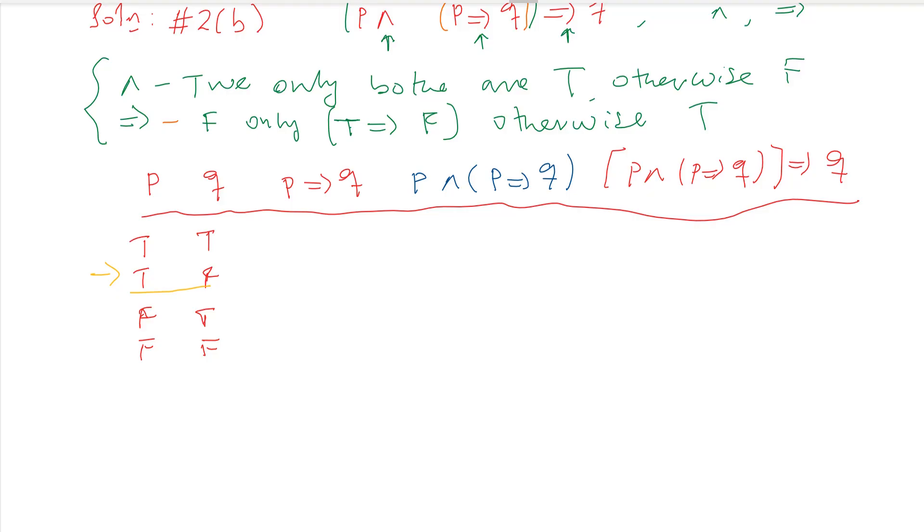It is the line where the first is true and the second is false. And the other one, p and p implies q. On p, first column. p implies q, third column. The first column with third column.